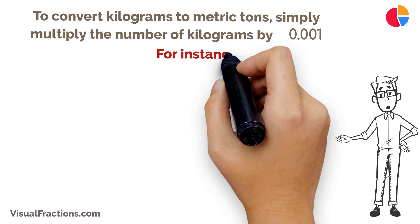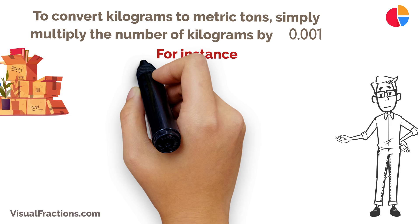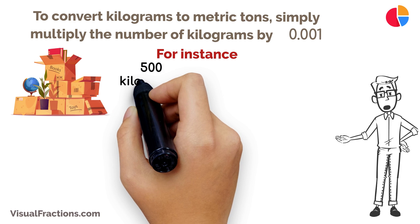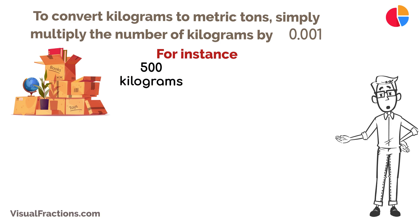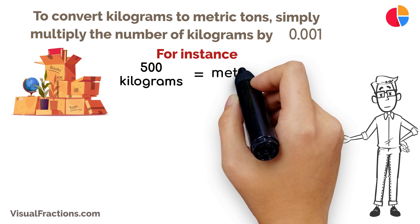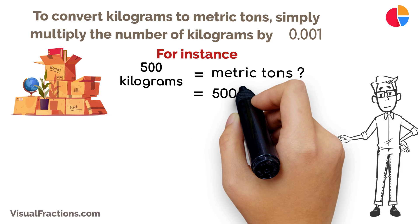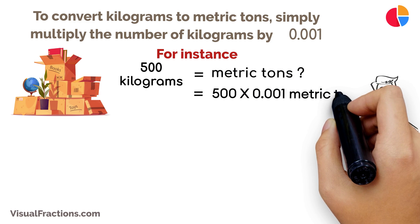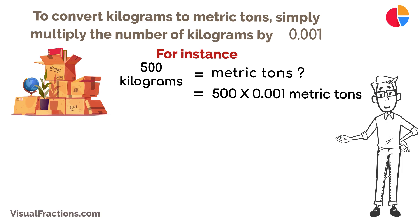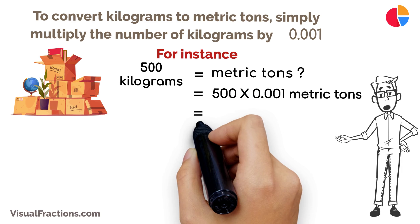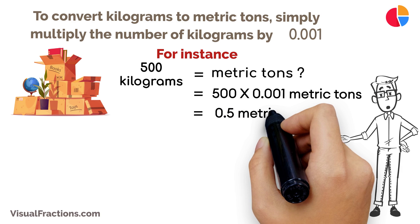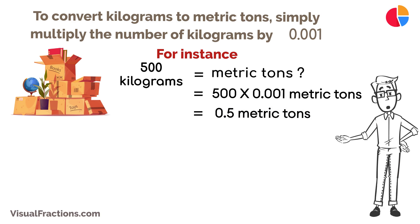For instance, if you're converting 500 kilograms to metric tons, multiply 500 by 0.001. This gives you a total of 0.5 metric tons.